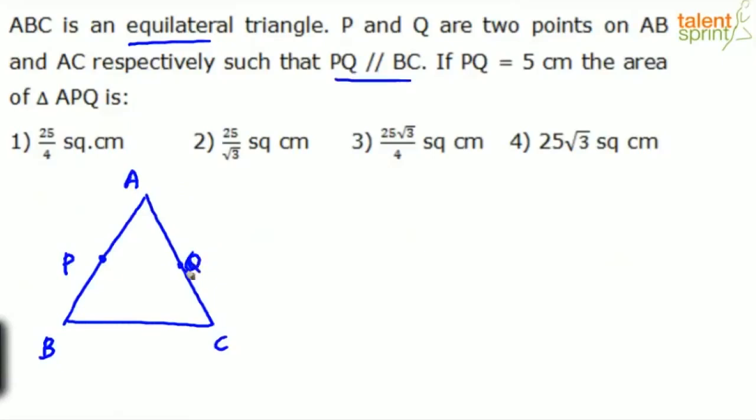You must consider the points in such a way that PQ will be parallel to BC. So PQ is parallel to BC. And PQ is 5. This length is given as 5. What is the area of the triangle APQ? We need to find out the area of this triangle APQ.